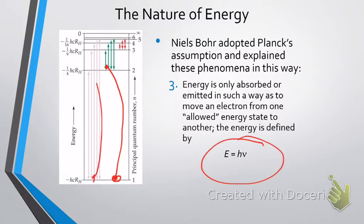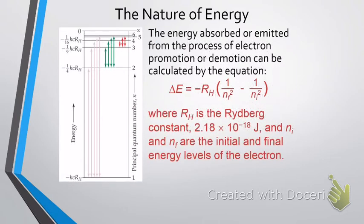Or you can have it, if it joins enough energy, jump up to the third energy level. Likewise, if you have an electron in the fourth level, it can actually come down to a different level and give off or emit that energy.